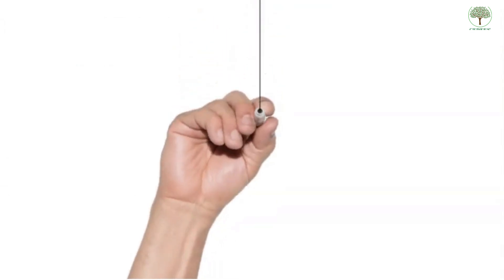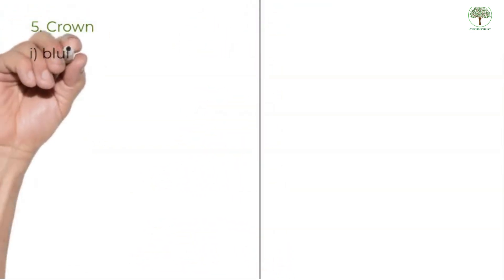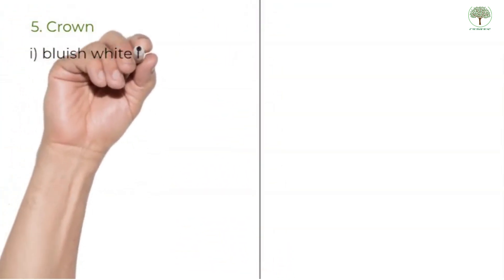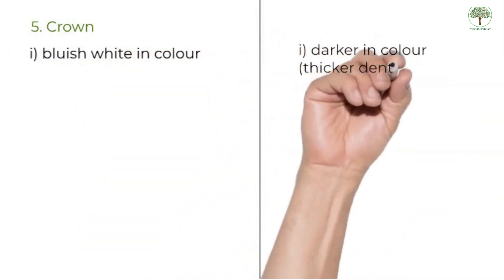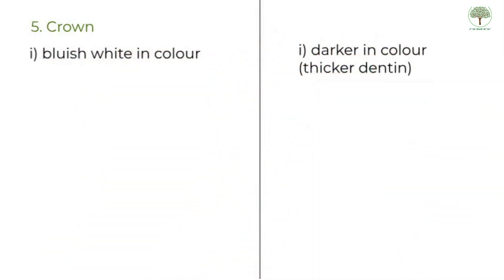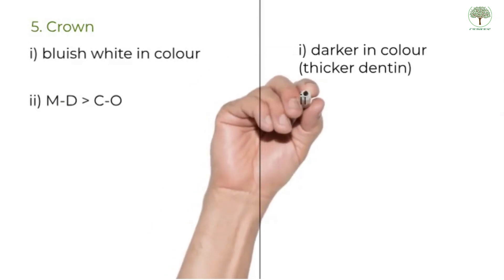The morphological differences, starting with the crown. The primary teeth are white, and the permanent teeth have a darker yellowish hue. This is because of a thicker dentin. The mesiodistal width of the primary anteriors is much greater than the cervical occlusal dimension, giving them a squarish appearance.